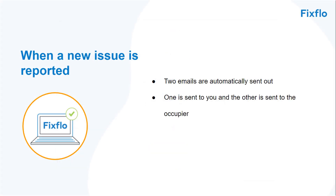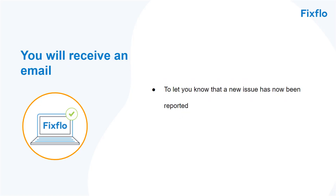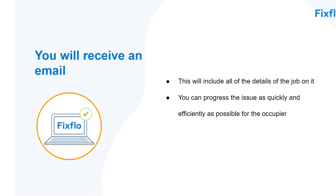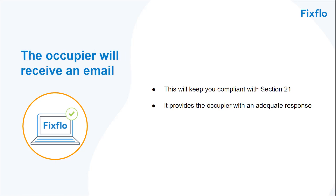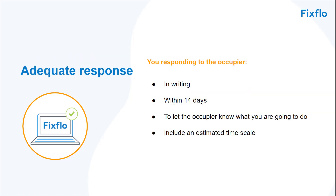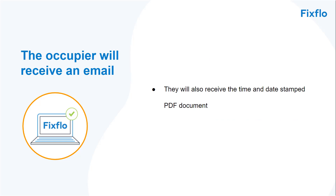When a new issue is reported, two emails are automatically sent out — one to you and one to the occupier. You will receive an email with all of the details of the job so you can progress the issue as quickly and efficiently as possible, and it will come complete with a time and date stamped PDF document. The occupier's email will keep you compliant with Section 21, as it provides them with an adequate response — meaning you have responded in writing within 14 days to let the occupier know what you are going to do along with the estimated timescales. Their email also contains the time and date stamped PDF document.